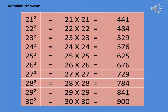21 square is equal to 21 x 21 is equal to 441. 22 square is equal to 22 x 22 is equal to 484. 23 square is equal to 23 x 23 is equal to 529. 24 square is equal to 24 x 24 is equal to 576. 25 square is equal to 25 x 25 is equal to 625.